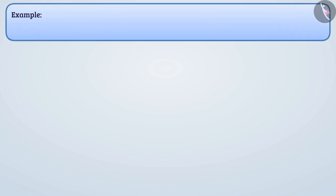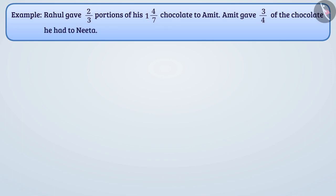Next example. Rahul gave 2/3 portions of his 1 and 4/7 chocolate to Amit. Amit gave 3/4 of the chocolate he had to Neeta. Find how much chocolate Neeta received.